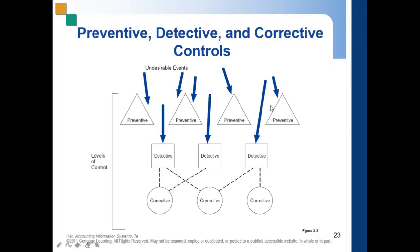If your preventive controls are insufficient, they will undergo the next level, which is detective control. As mentioned, preventive control is your first line of defense. They are passive techniques designed to reduce the frequency of occurrence of undesirable events.